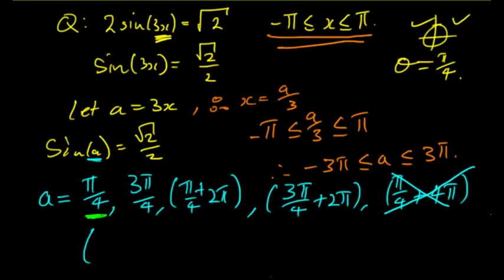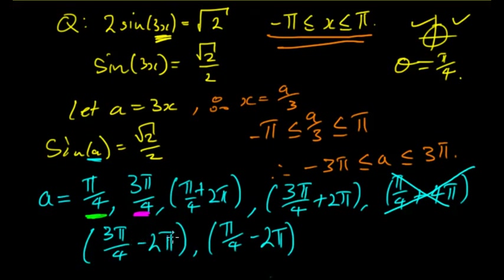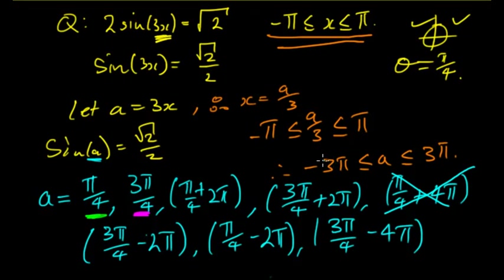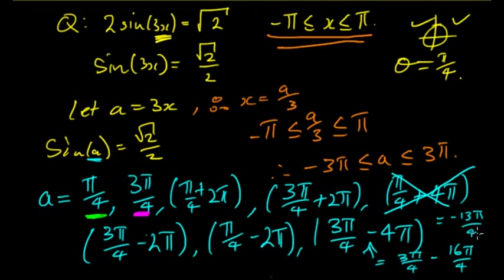Now looking at the negative results, start with the bigger value: 3π/4 − 2π and π/4 − 2π. Then 3π/4 − 4π — working that out, since 3π/4 is less than π, this equals 3π/4 − 16π/4 = −13π/4. The magnitude of that is greater than 3π, which is −12π/4, so it's outside the range. So I have identified all the valid values.